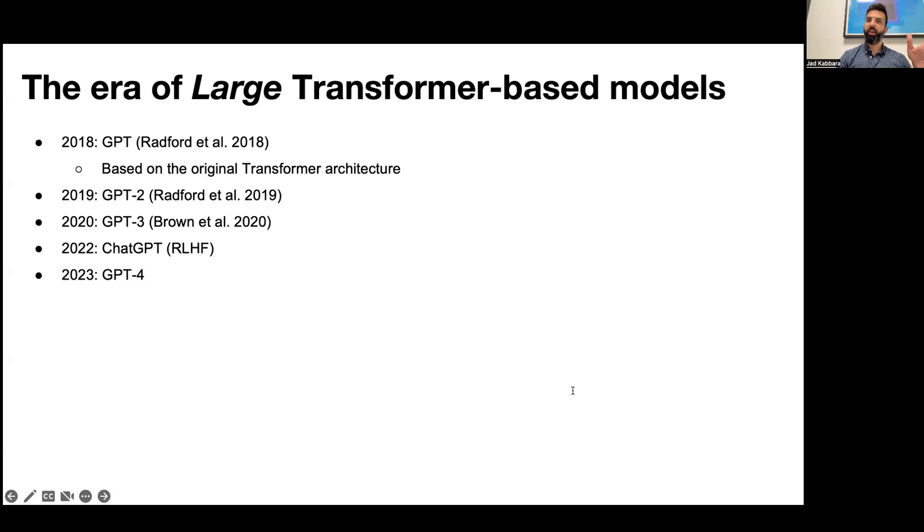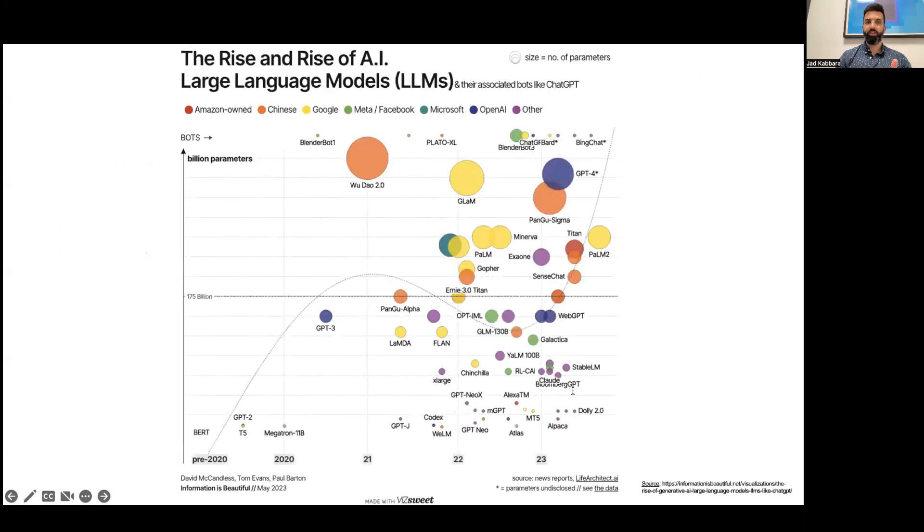What we saw here with the progression of GPT basically reflects to a large extent what we saw across the whole research area of large language models. Essentially, models kept getting bigger and bigger, thus requiring more and more data.